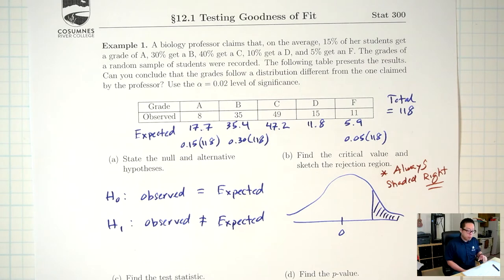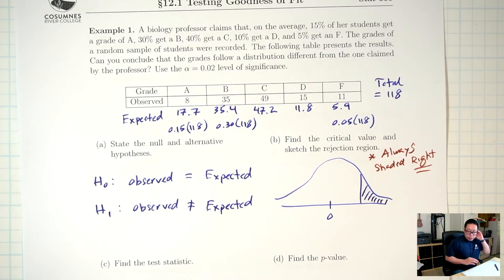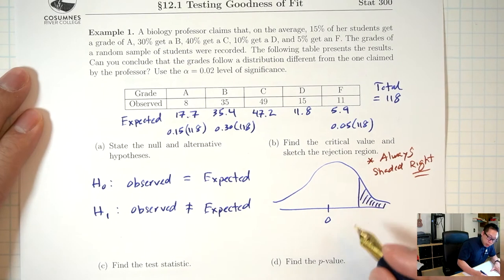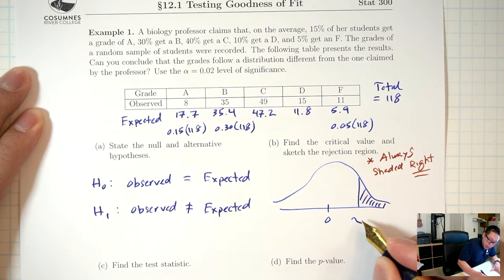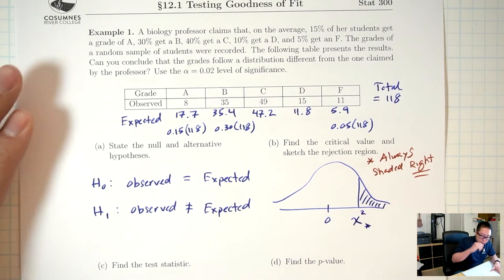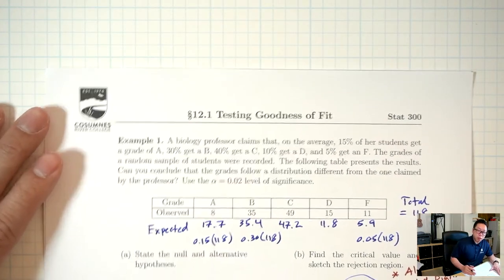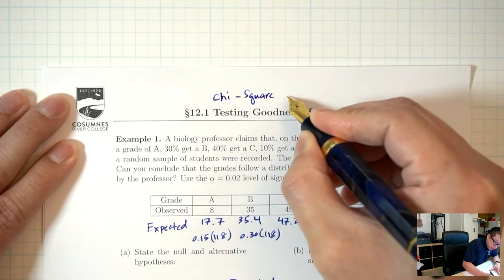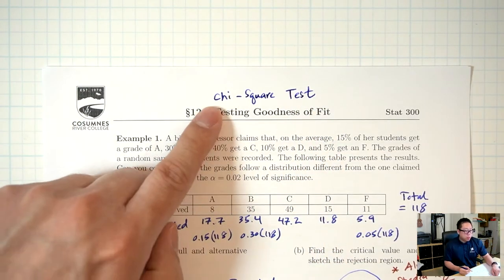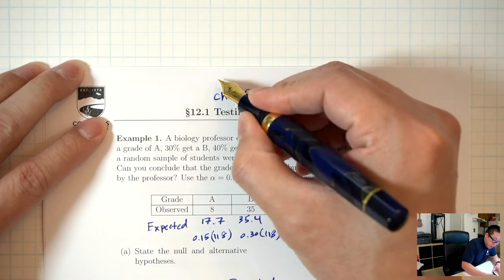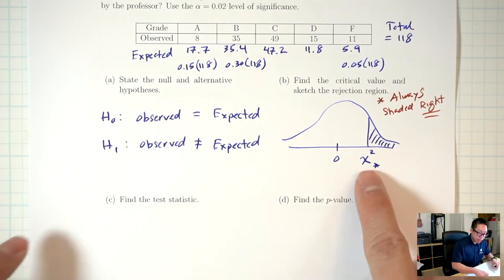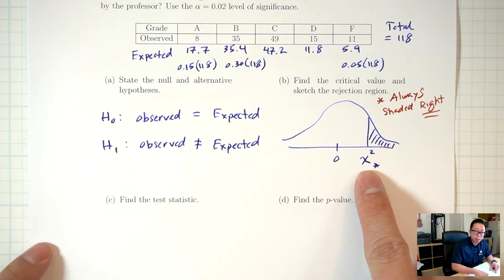On all the other hypothesis tests, not-equals meant two tails. The second difference is that instead of looking for a Z-star or T-star, for a goodness-of-fit test we look for a chi-square star — which is why a goodness-of-fit test is sometimes called a chi-square test.